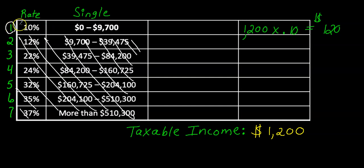Again, if you fall in row one, no fancy math at all. You just take your taxable income and multiply it by this 10% right here and you're done. So that's another special case as well. And it's actually the easiest situation you will fall into.